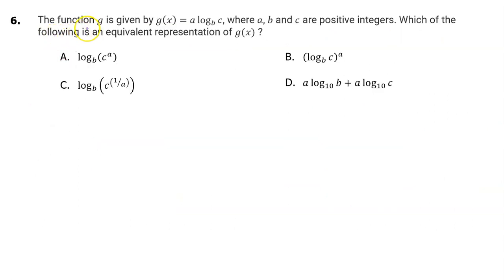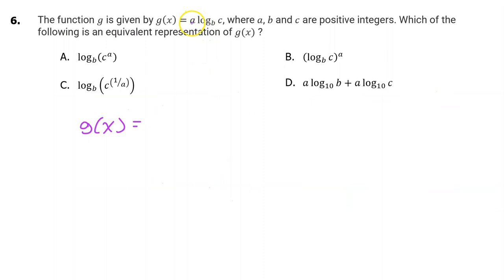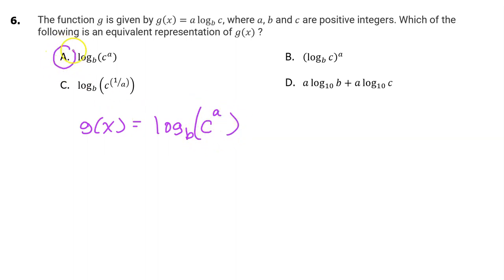Number 6. The function g is given by g of x equals a times log base b of c, where a, b, and c are positive integers. Which of the following is an equivalent representation of g of x? The power rule says we can take a number in the front and move it to the exponent. So taking the a from the front and moving it to the exponent, we get log base b of c to the a power. The answer is A.